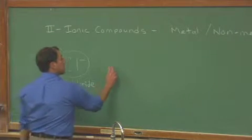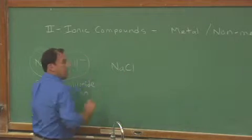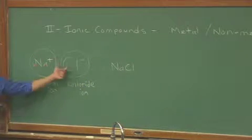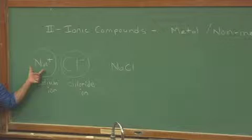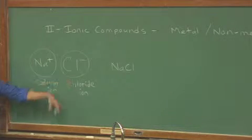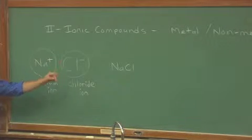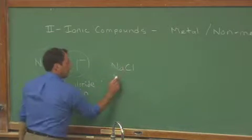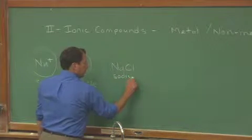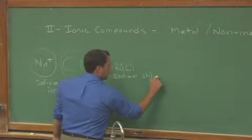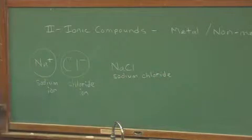The formula for this is simply written as NaCl. We leave the charges out. The charges have to cancel. So we get one plus, one minus, charges wash, and we end up with NaCl, sodium chloride. A very simple ionic compound.